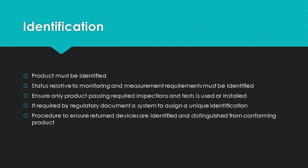Product must be identified throughout the process, including raw materials and components through subassemblies to the finished product. The test status must also be identified — is it tested and passed, failed, or has it not been tested? Product must be identified to ensure only conforming product is used or installed, including components and subassemblies. If required by regulatory agencies, a unique identifier or serial number must be assigned and documented. There must be a procedure to control and identify returned product to distinguish it from conforming product.